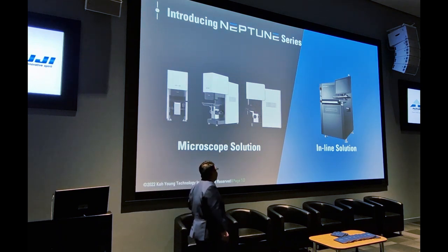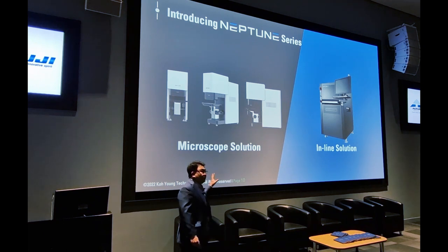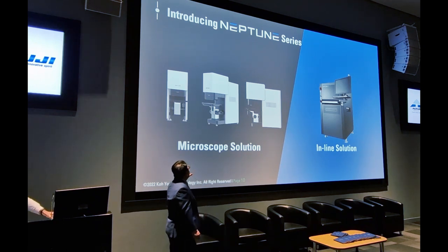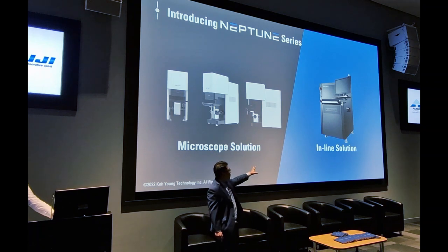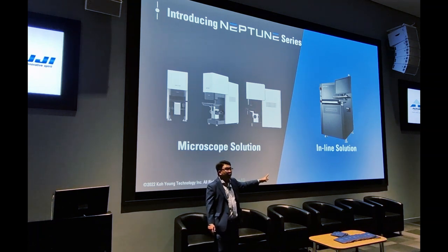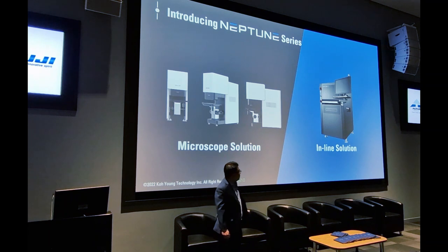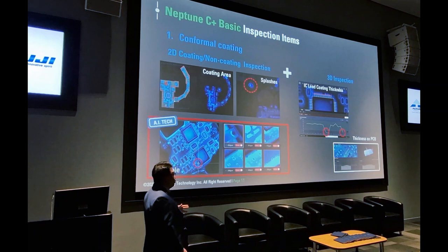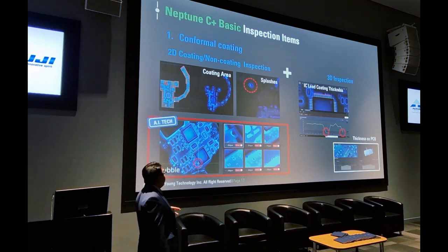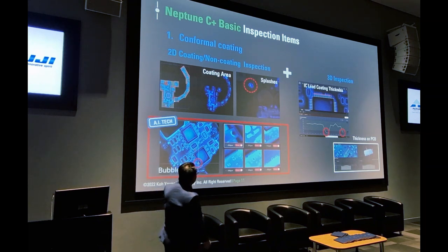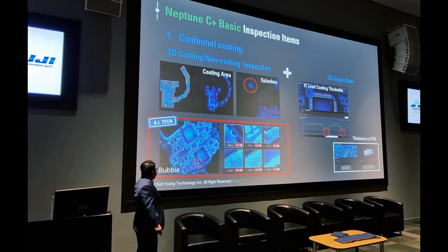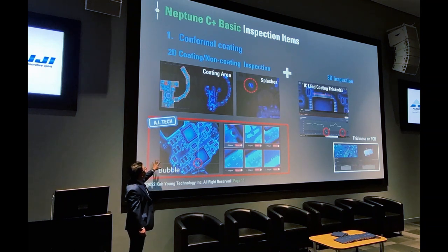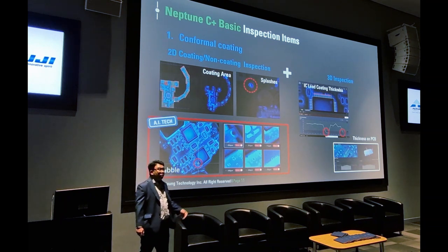Here is the product lineup of the Koyoung Neptune system. The tabletop solution as the offline system is called Neptune T, and we also have an inline solution — just like SPI and AOI with conveyor transportation — called Neptune Filter. By having UV lighting within our system, we can inspect 2D defects such as coating area, splash, and bubbles. We also use AI technology in the bubble detection algorithm.